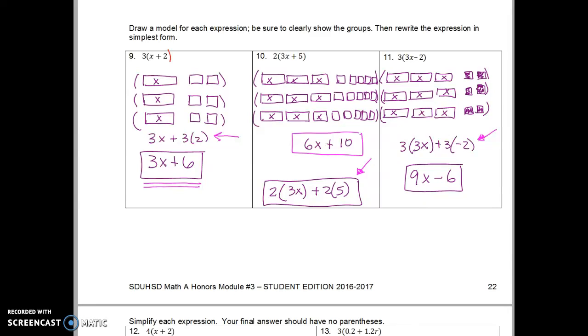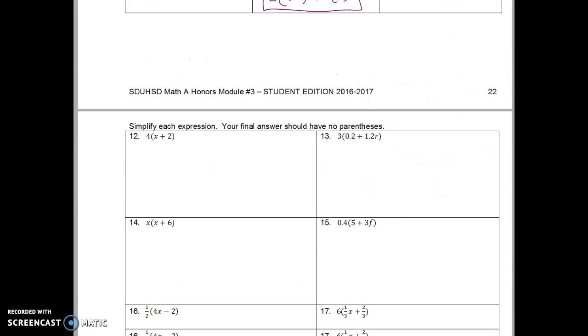Alright, so on the next page is do these without models. So be thinking about what you just did. Be thinking about these groups. Number 1 says, oh, the directions say simplify each expression. Your final answer should have no parentheses. This is the key to knowing whether you've simplified or not. And also be thinking in your mind what this picture would look like. So four groups of x plus 2. I have four groups of x. That will give me four x's. And in my groups are 2's. So four groups of 2 would give me eight 1's. My final answer is 4x plus 8. I'm not going to model.